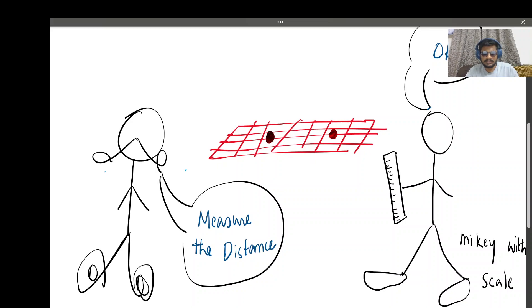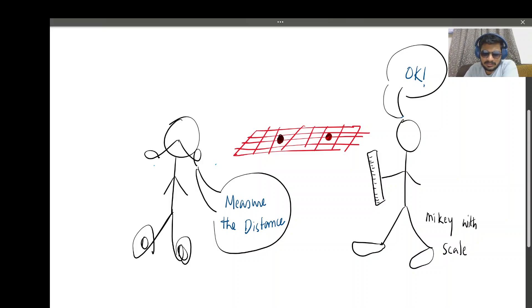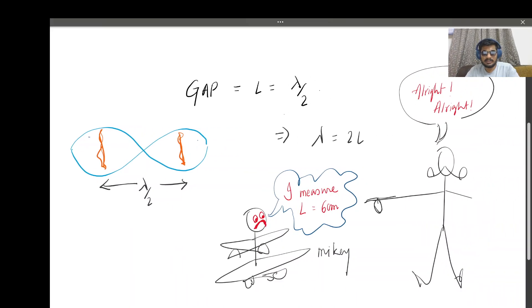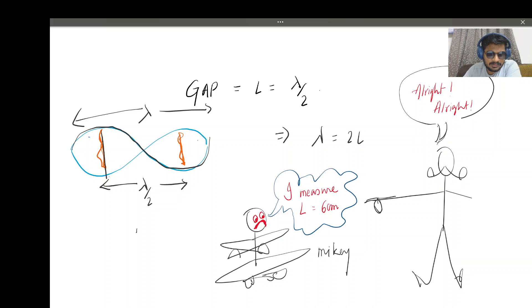Once it melts, take it out and measure the distance. Mikey has a scale and measures the distance - let's say this is L. The gap equals L by 2 because for a standing wave, the wavelength from here to here is full lambda. We need the distance which is lambda by 2. So lambda by 2 equals L. Mikey measures L equals 6 centimeters. I plug it in and get lambda equals 2 times 6 centimeters, which is 12 centimeters or 0.12 meters.